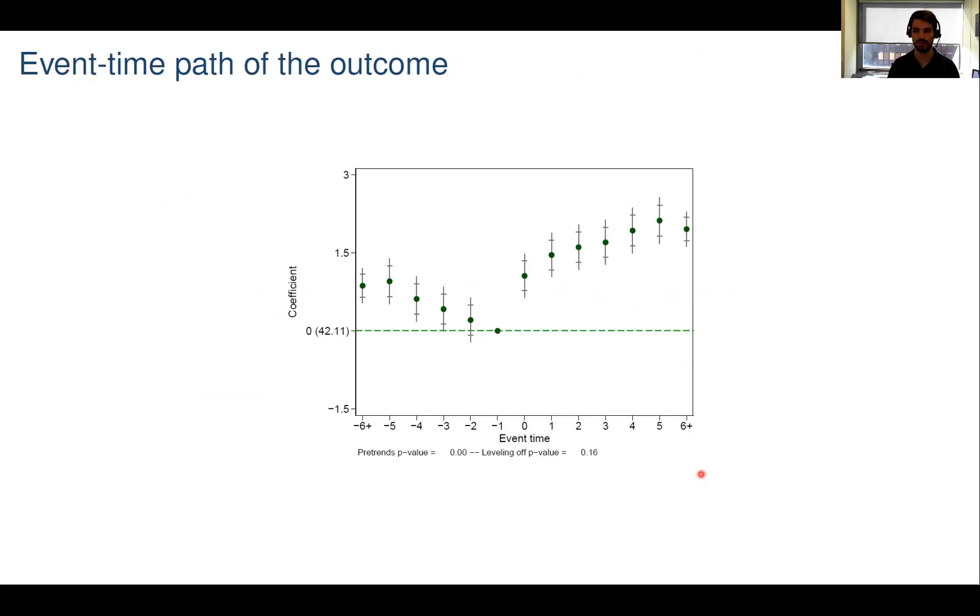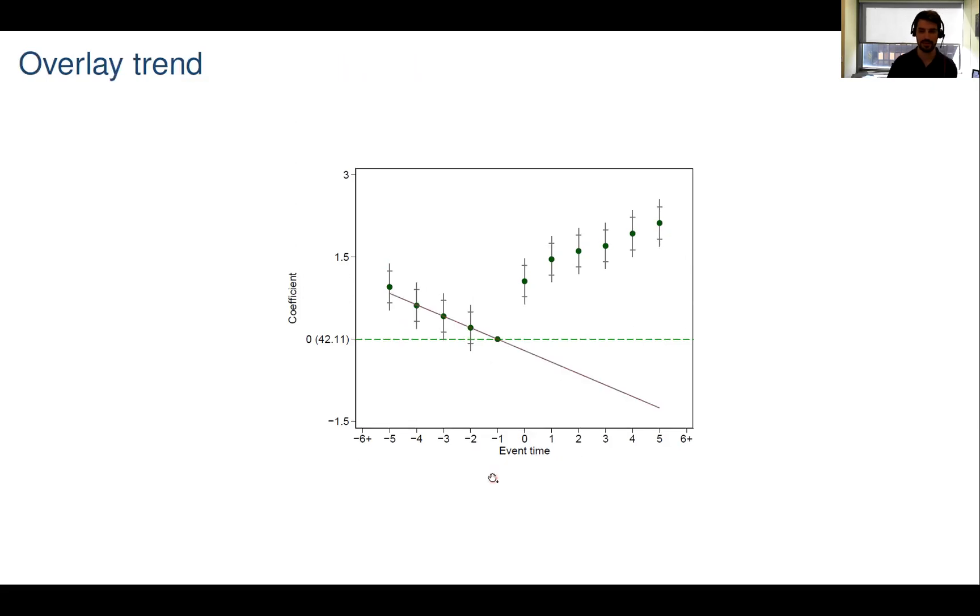Suppose this is the event time path of the outcome. From this plot alone, we don't know what the confound looks like after event time minus one, because it's confounded there with the effect of the policy. But suppose we're willing to assume that the confound has a linear event time path. Then we can learn the slope of that linear path from the periods leading up to the event. From this part of the figure, we can learn the slope of this linear event time path. Which means we can estimate that slope, and we can add it to the event study plot, as I've done here.